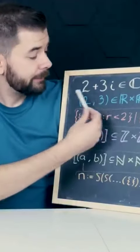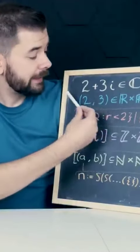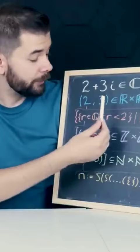So, to summarise, a complex number like 2 plus 3i is actually the ordered pair (2, 3) of real numbers, where the real number 2 is actually the Dedekind cut of all rational numbers less than 2 and greater than 2.